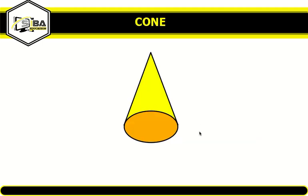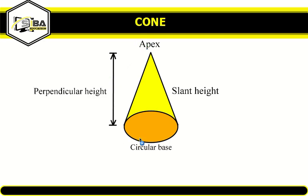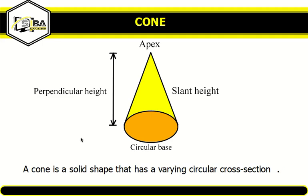Now finally, the shape that we want to talk about is the cone. Let's identify the parts of this cone. As you can all see, it has a slant height, an apex, a perpendicular height, and a circular base. Now unlike the cylinder, a cone has a varying circular cross section, so for a cone the cross section changes as you go along the perpendicular height.